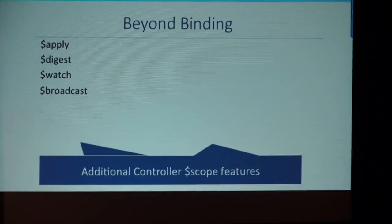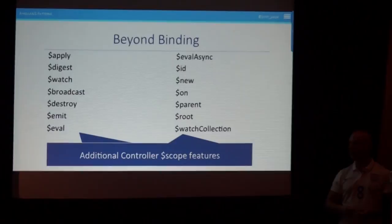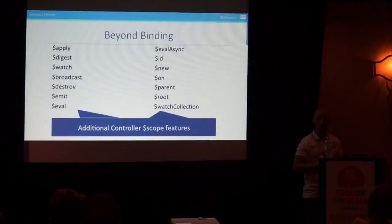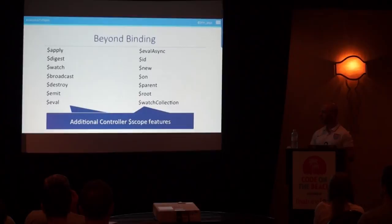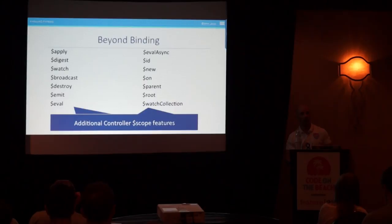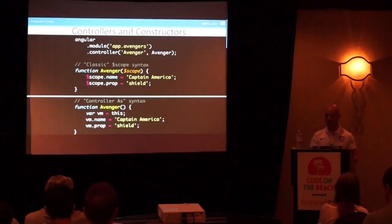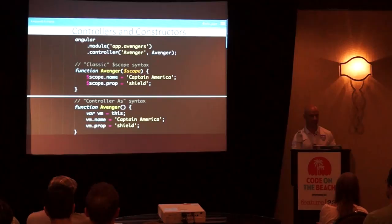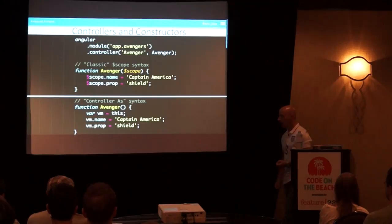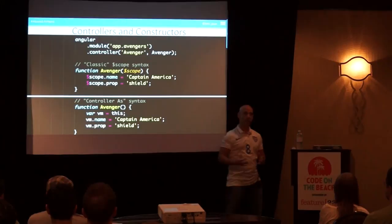Once you have scope inside your controller, people start using it all over the place — doing things the controller shouldn't do, like creating watches and running digest cycles. By eliminating scope from the controller using the controller-as technique, it makes it harder for someone to accidentally start using scope. You can still use scope if you want — in effect, the vm is your scope — but this way you're binding to it cleanly, which is the key.